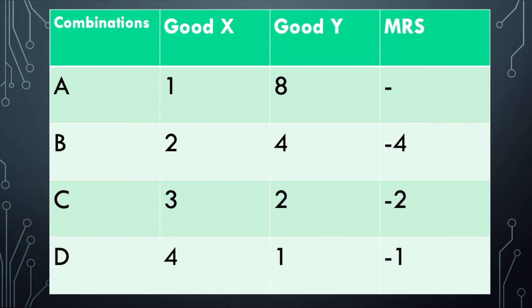At point D, the MRS will be 1 minus 2 divided by 4 minus 3, which is minus 1 divided by 1,